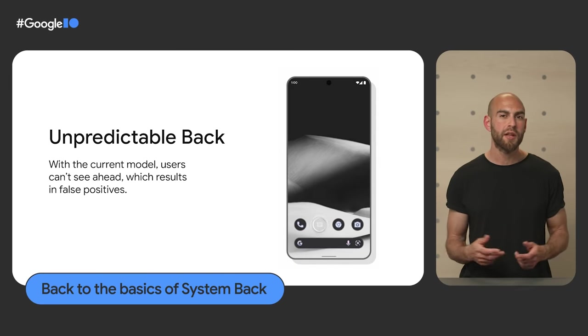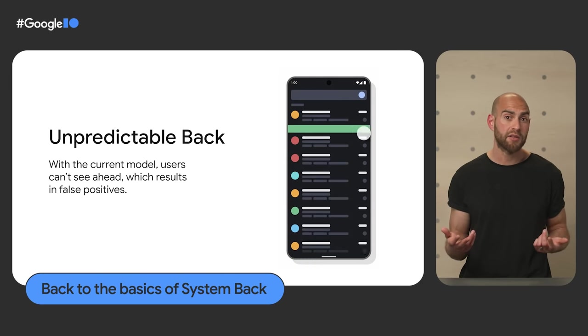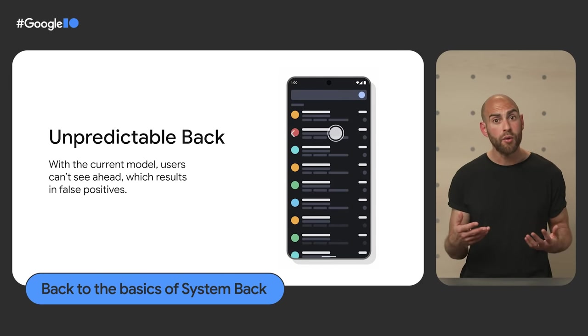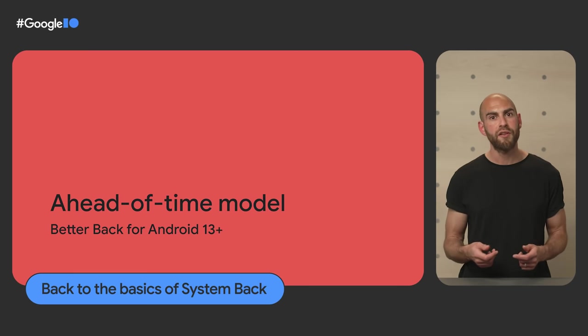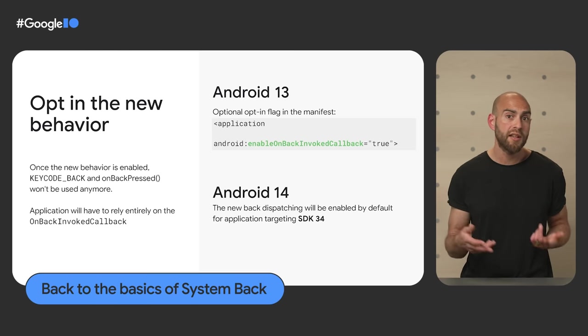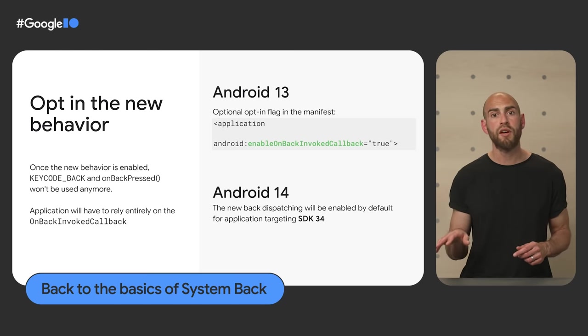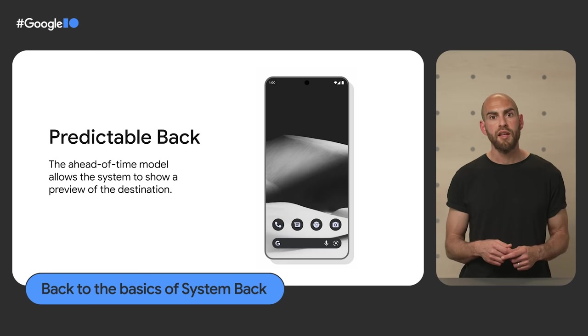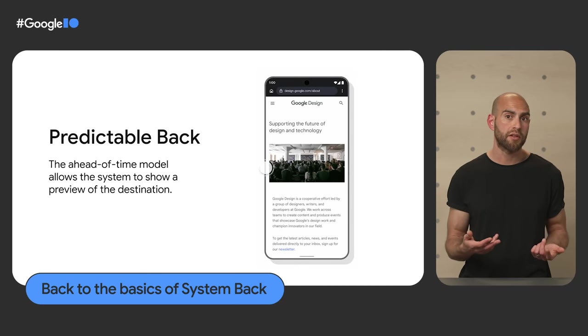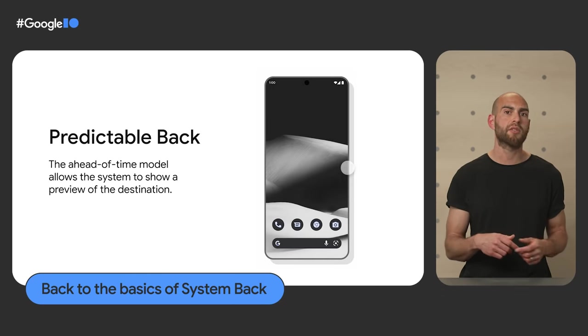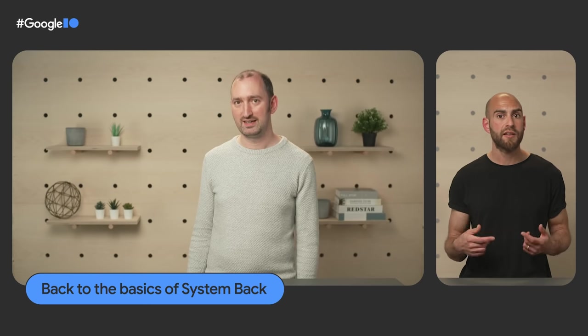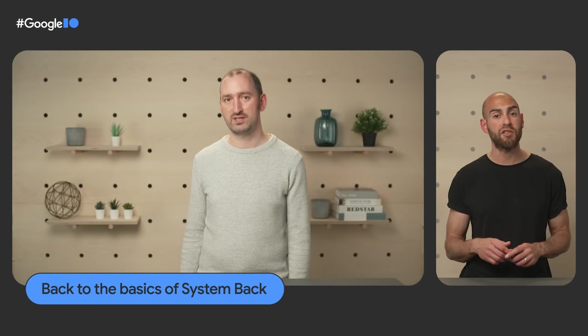The iconic Android back action has evolved from a physical button to a software affordance to an ergonomic gesture, but it can sometimes be unpredictable where pressing back will take you. Android 13 introduces the evolution of back with a new opt-in API that lets you tell the system ahead of time whether you're handling back or not — enabling better communication to users, for example previewing that back will exit the app and return to the home screen. Check out 'Back to the Basics of System Back' for implementation details with the Jetpack Activity library.